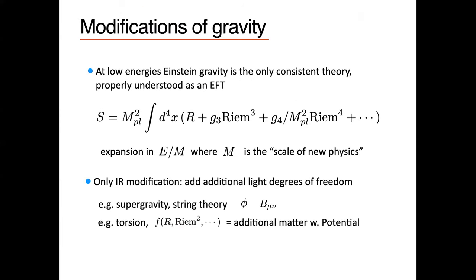Let me briefly describe the theories we're considering. At low energies, Einstein gravity is essentially the only game in town, and this should be understood as an effective theory. We have our Einstein-Hilbert term, and then there can be higher dimensional operators that modify this. Today we'll be studying four dimensional Einstein gravity, which is supposed to describe our world.